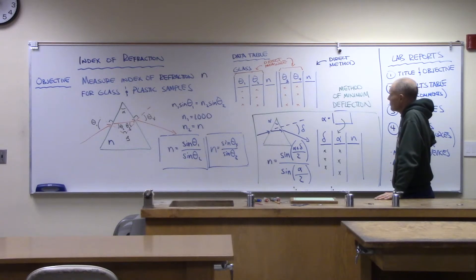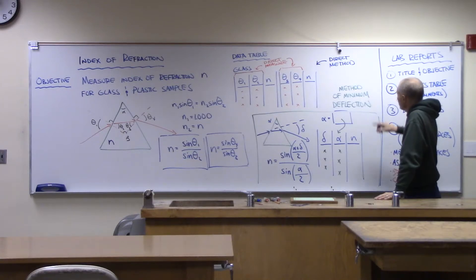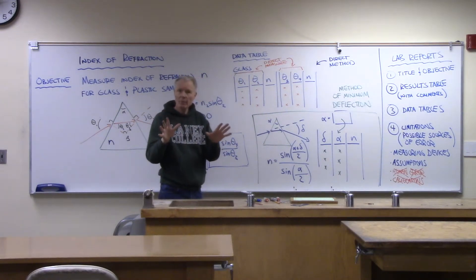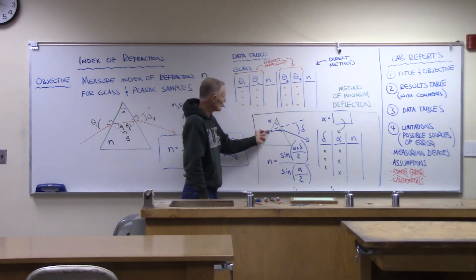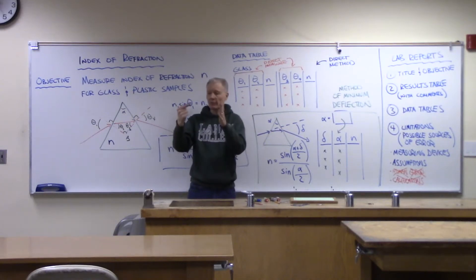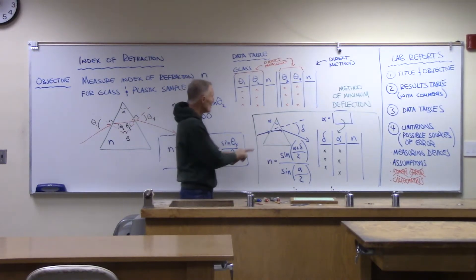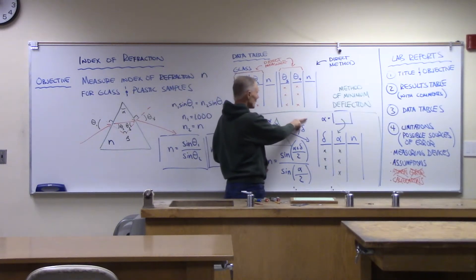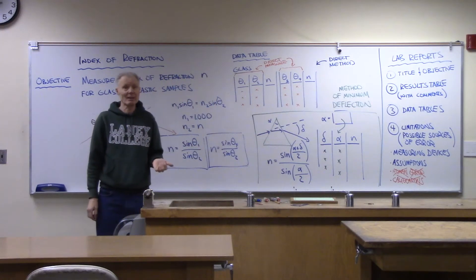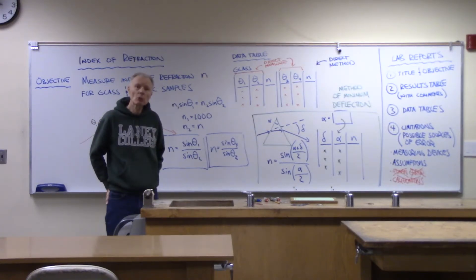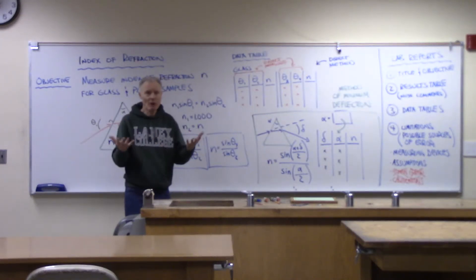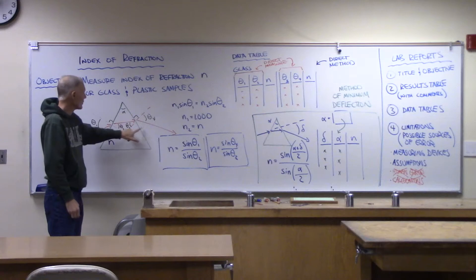There's a second method we want to look at today — we'll take both samples and use both methods. The second method is called the method of minimum deflection. Deflection is defined as follows: a path of light comes up to the first edge, refracts, passes through the glass, and refracts again on the way out. Compared with the path of light approaching the glass and the path leaving the glass, what's the angle of deflection? We use a little Greek delta, because delta sounds like deflection.